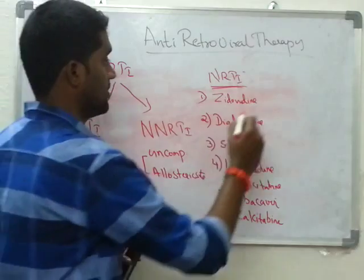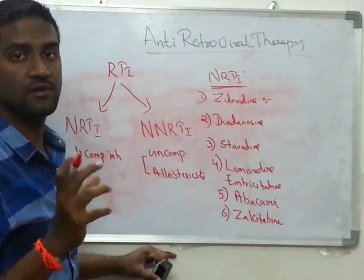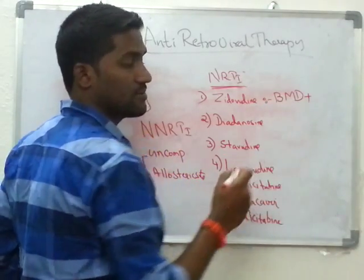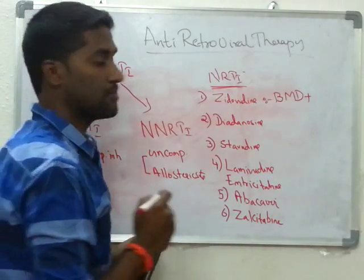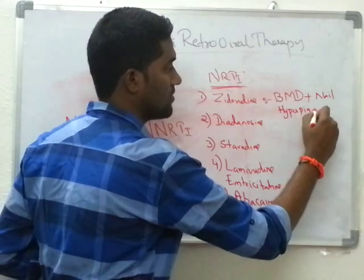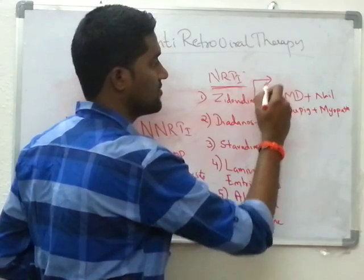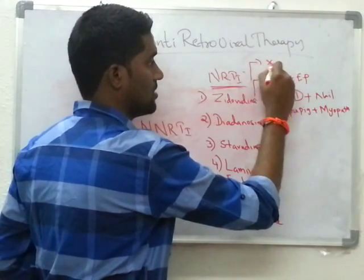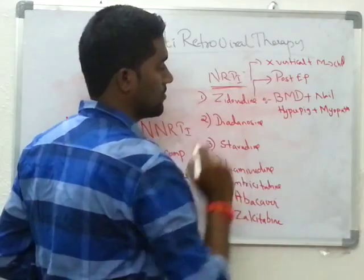The significance of Zidovudine — very important is its uses and the dose-limiting side effect. For Zidovudine, the dose-limiting side effect is bone marrow depression: there will be anemia, neutropenia, and decreased platelet count. Also remember nail hyperpigmentation and myopathy. Zidovudine can also be used for post-exposure prophylaxis and prevention of vertical transmission from mother to child.